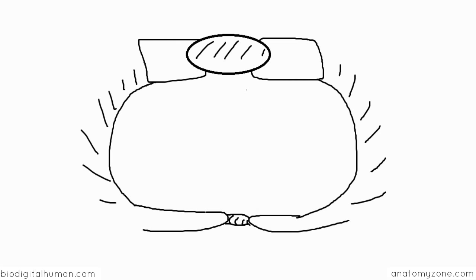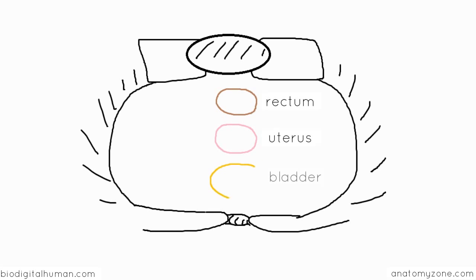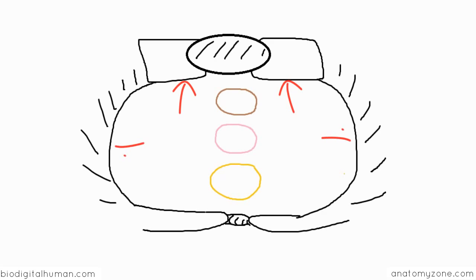Posteriorly we have the rectum, anterior to the rectum is the uterus, and at the front is the bladder. This diagram is a horizontal section of the pelvic viscera showing how the various ligaments attach to the uterus. There are ligaments which attach posteriorly to the sacrum, ligaments which attach to the lateral side walls of the pelvic cavity, and ligaments which attach anteriorly to the front of the pelvic cavity.